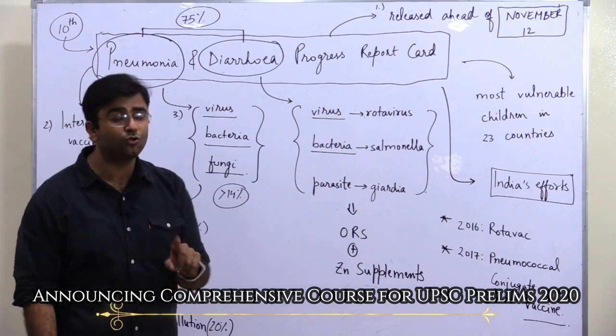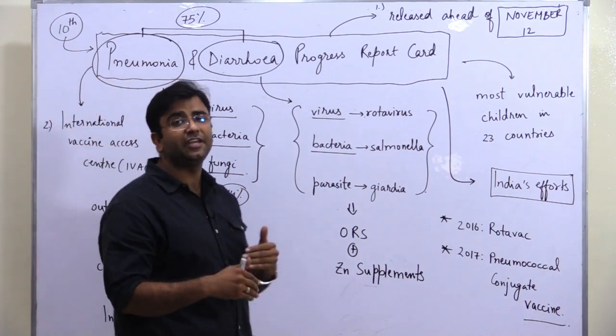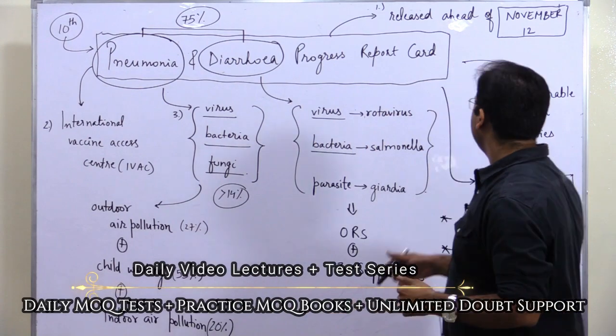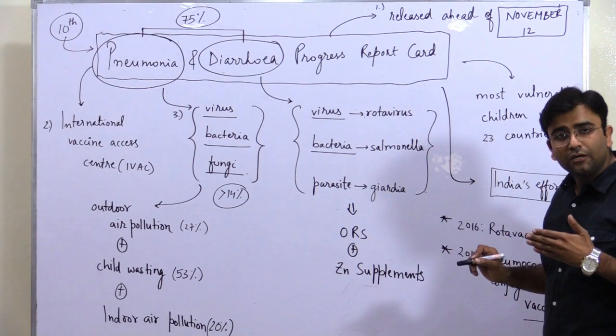The most deaths are from diarrhea, second comes pneumonia. This report card analyzed the 23 countries with the most vulnerable children.